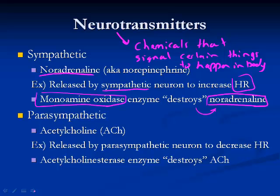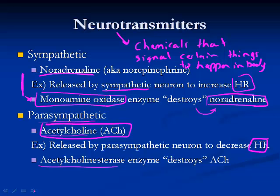The parasympathetic nervous system uses a neurotransmitter called acetylcholine, abbreviated ACh. This is released by parasympathetic neurons to decrease heart rate. An enzyme called acetylcholinesterase destroys the acetylcholine. These systems work in antagonistic fashion: to slow down, we release an enzyme to break down noradrenaline and release more acetylcholine; to speed back up, acetylcholine is broken down and noradrenaline is released.